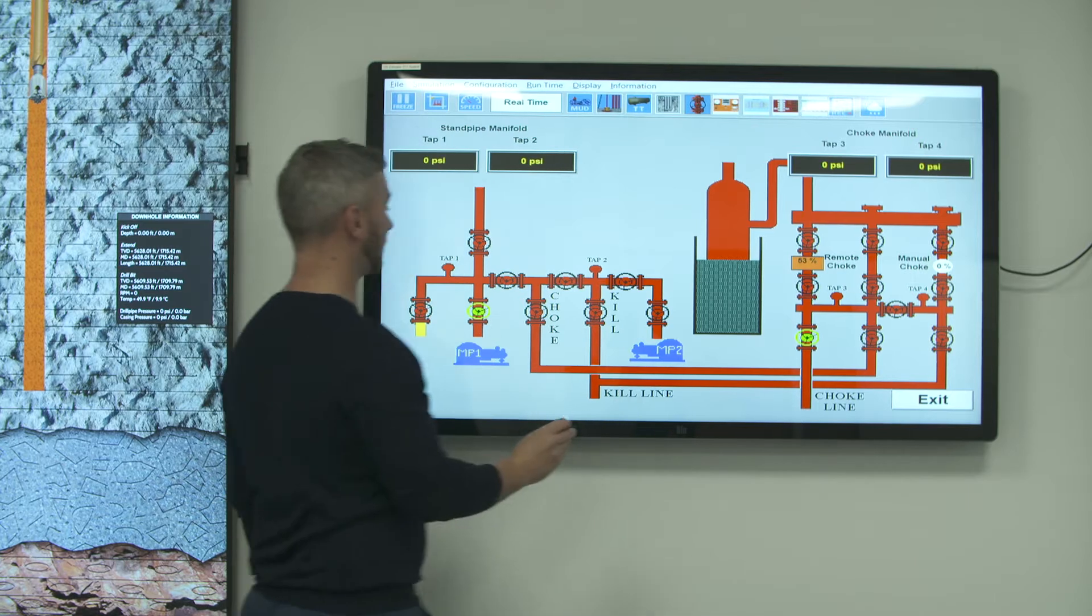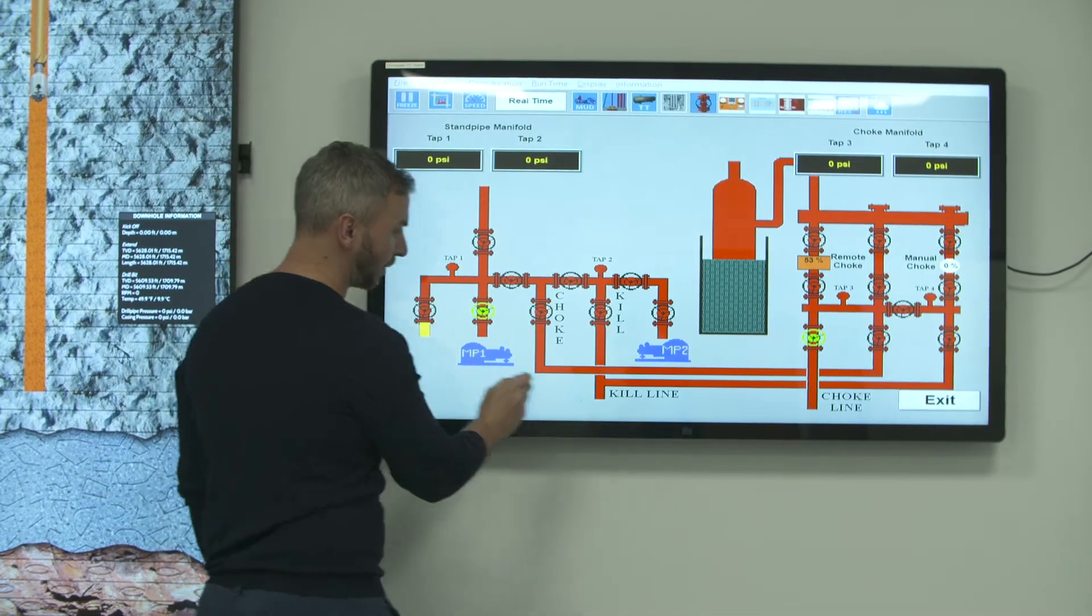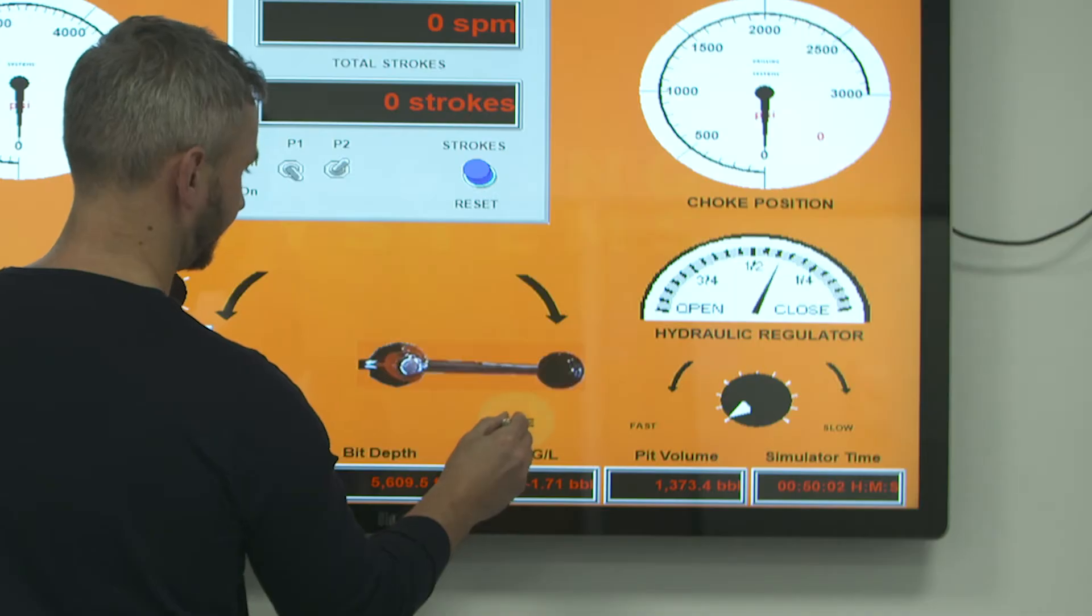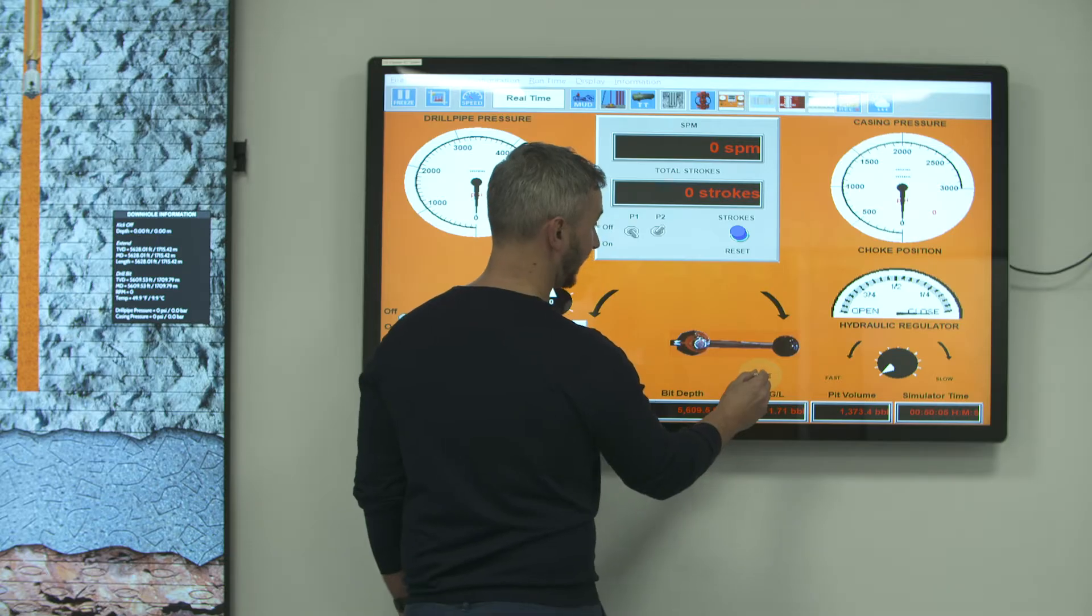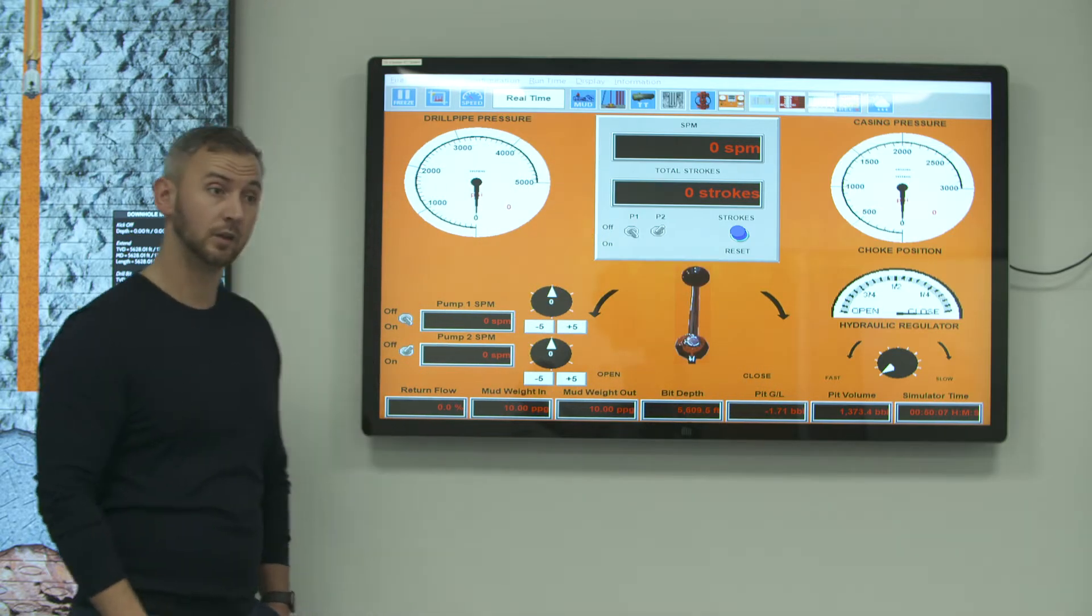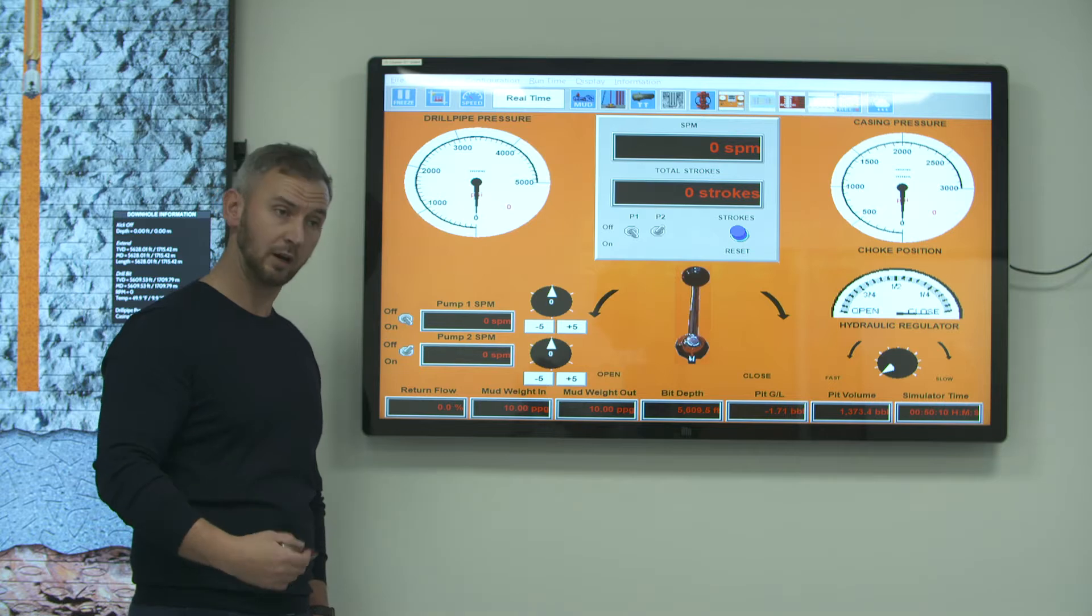The instructor is able to demonstrate manifold lineups, BOP operating procedures, and choke panel configuration, as well as the correct tripping and drilling operating procedures. In this lesson, the instructor is explaining the advantages of the hard shut-in method.